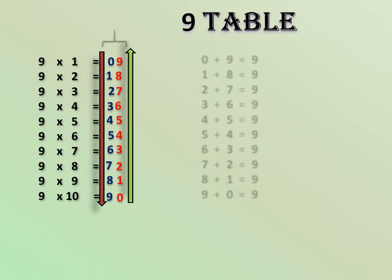And another trick is the sum of the product obtained by any multiple of 9 gives 9 only. So by adding the product we will get 9 always. You can check with these examples.